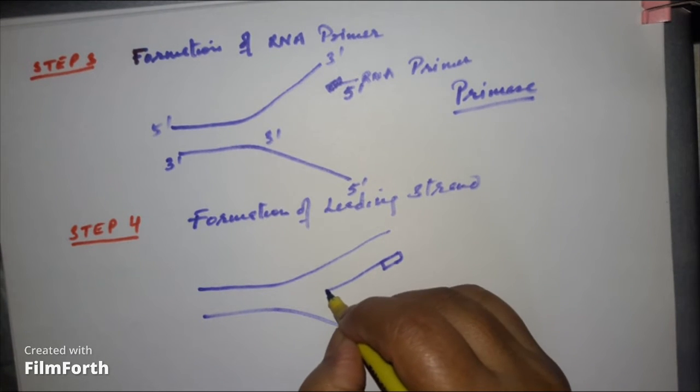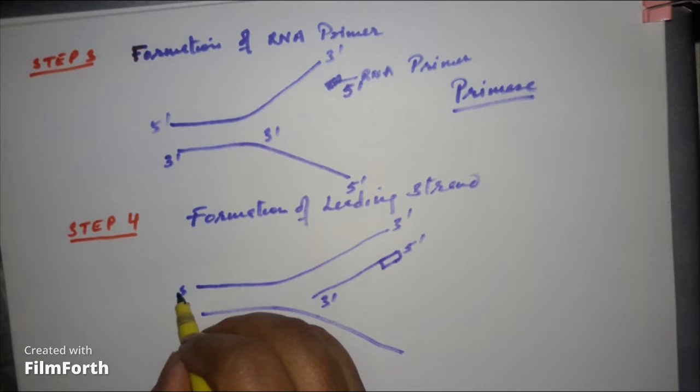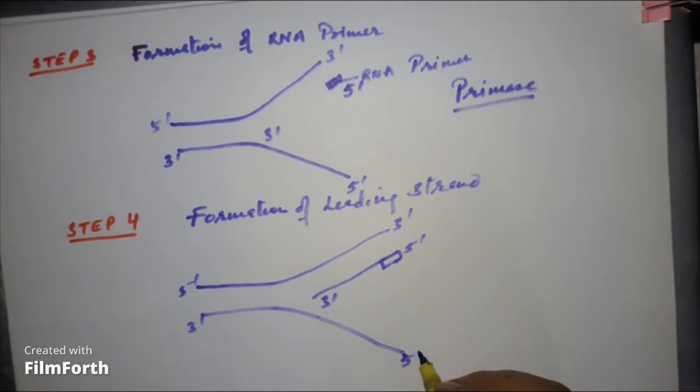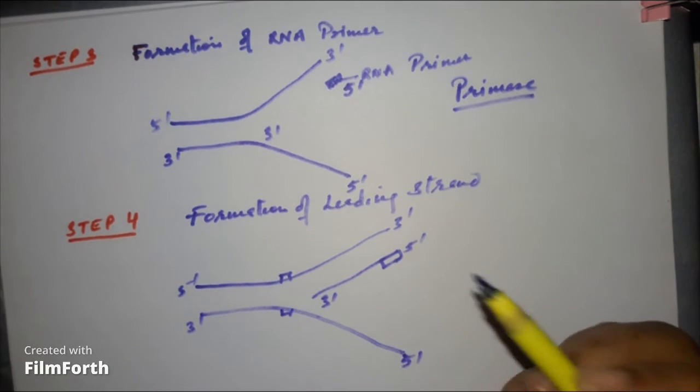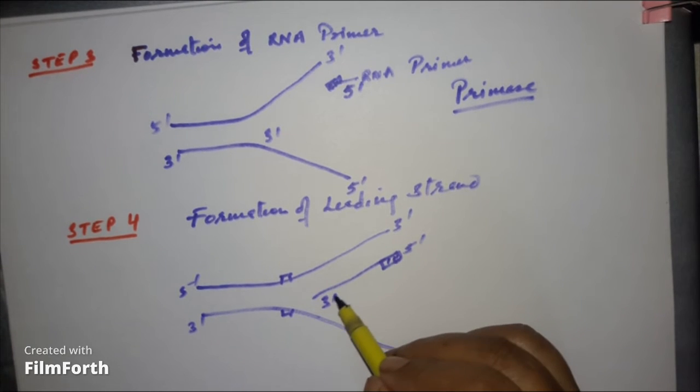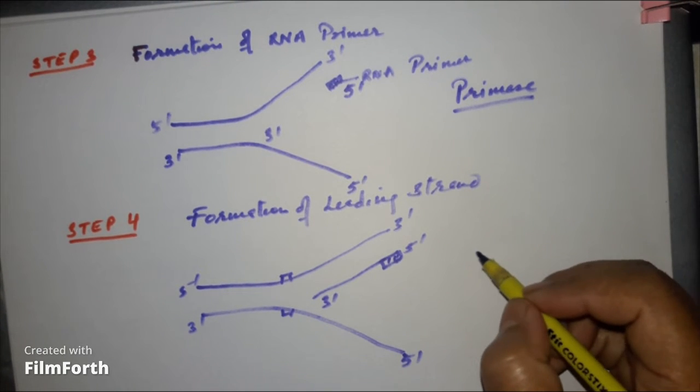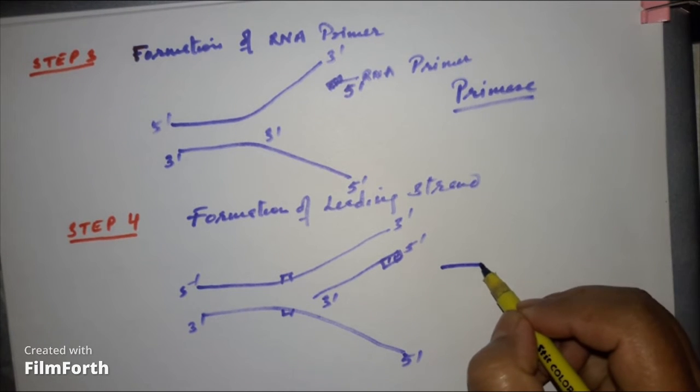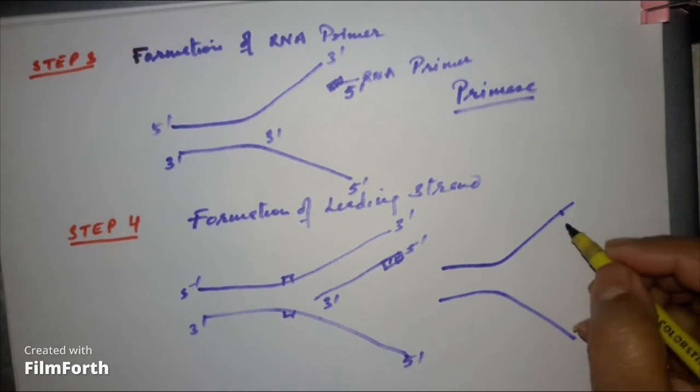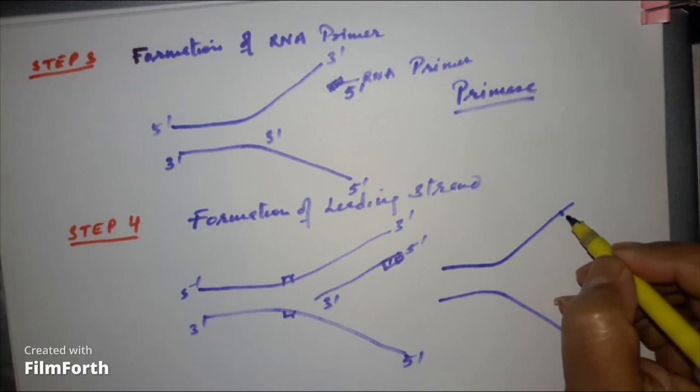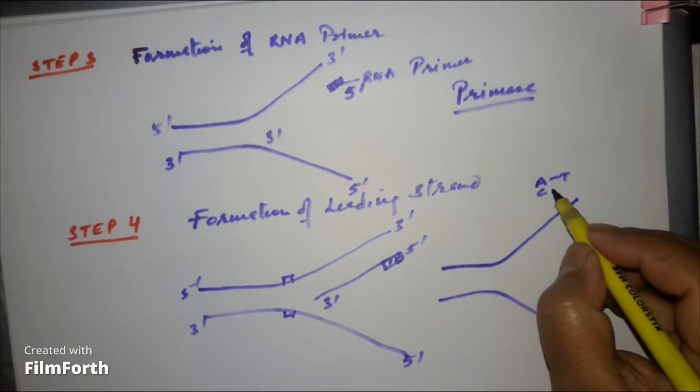Leading strand will be produced in this direction, 5 prime to 3 prime direction. This is 3 prime to 5 prime direction. Must remember the sugar ends we have studied earlier. These are the enzymes. So leading strand will be produced in this direction. How? Already we have discussed that the first step was the raw material. The raw material ATP according to the complementarity rule. You know what is the complementary rule? ATCG. Adenine will always pair with thymine, cytosine will always pair with guanine.